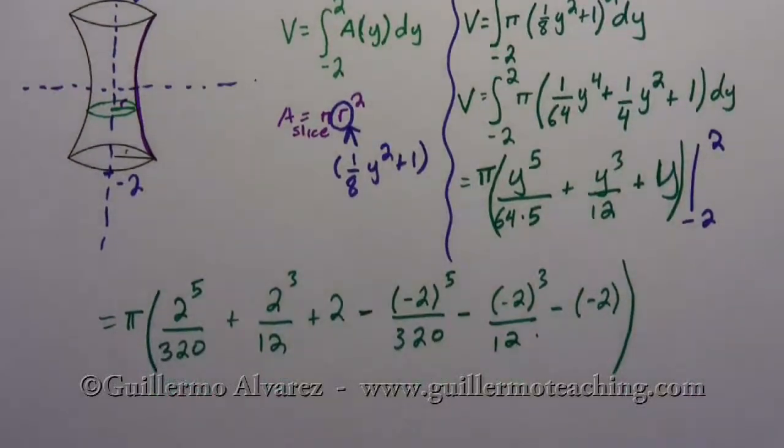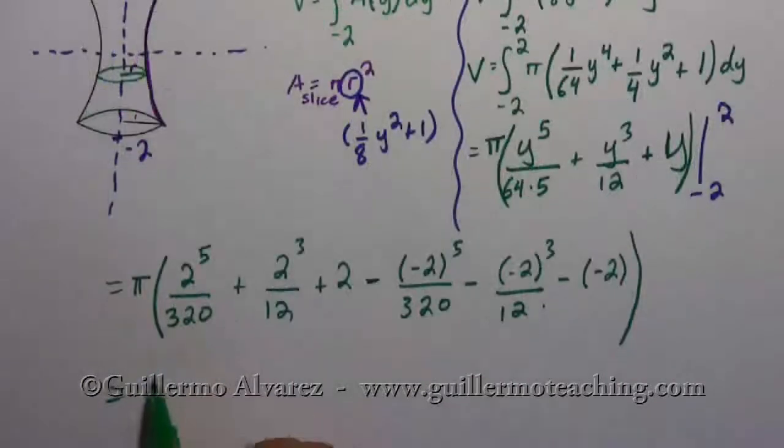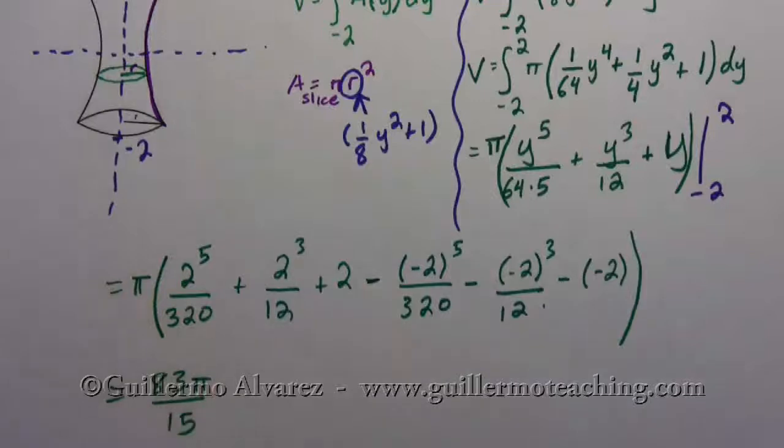But, well, now we're already into it. And so all we need to do is simplify. And so what we get is eighty-three pi over fifteen. And that's the volume.